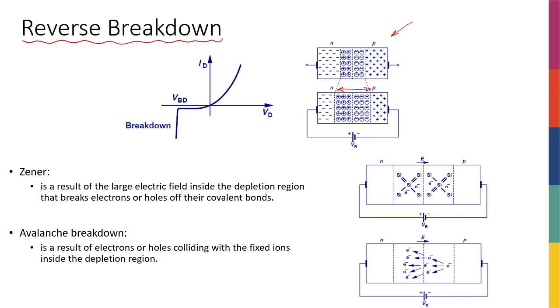A very common example for this breakdown phenomenon is lightning, in which case the electric field in the air reaches such a high level to ionize the oxygen molecules. Therefore, it will lower the resistance of the air and creates a tremendous current from the clouds to the ground. And that's what we call a disaster.